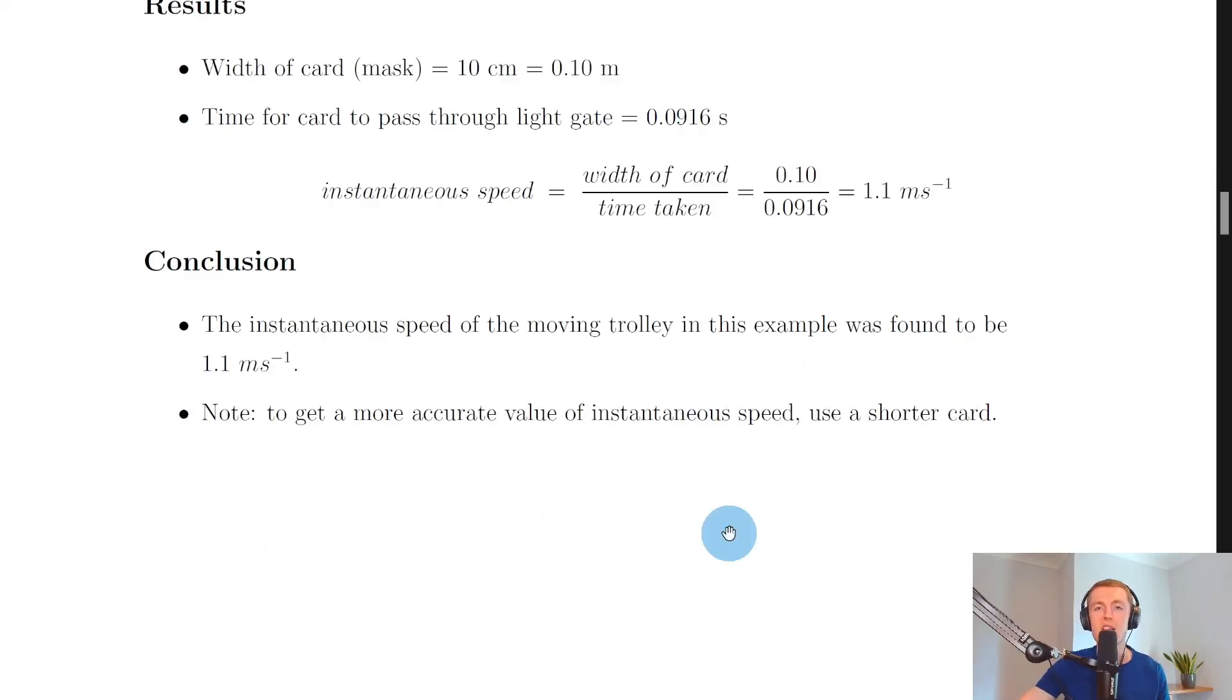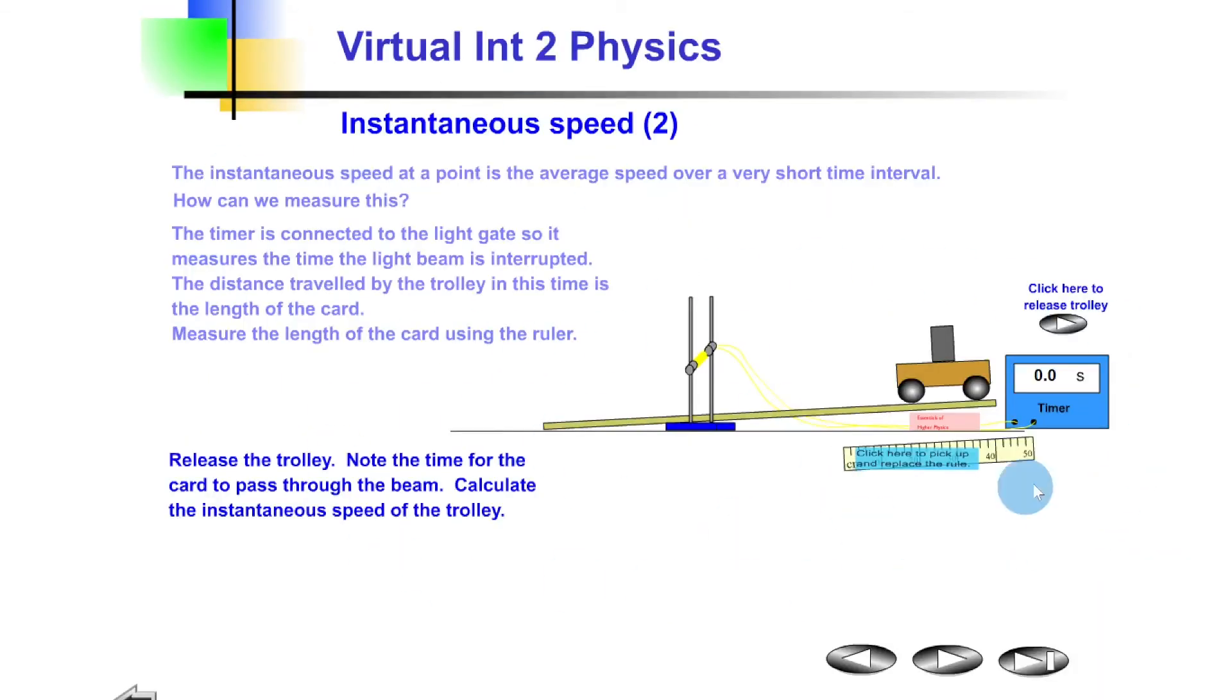You can ignore the text here and just focus on this setup. We've got one light gate, a ramp propped up at an angle, then a trolley with a short mask on it and a ruler. Our timer is connected to the light gate.